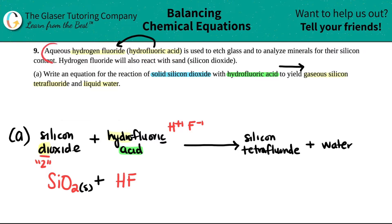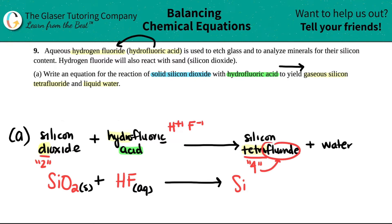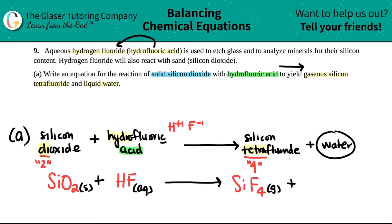Now they tell us that hydrofluoric acid was aqueous, so we need to write AQ here. And yield — we're going to produce silicon tetrafluoride and water. Silicon tetrafluoride: I see the word 'tetra' in here, so this is covalent bonding. Tetra means four. So I have a compound with silicon, which is Si, and now I have four fluorines — tetrafluoride is four fluorines — so SiF4. And they tell me that was a gas: gaseous silicon tetrafluoride. So I know this is a gas, plus liquid water. Water is H2O, and they said it was a liquid, so I put an L here for liquid.